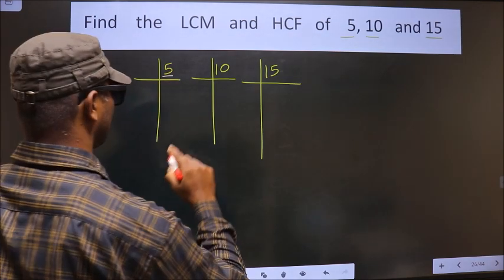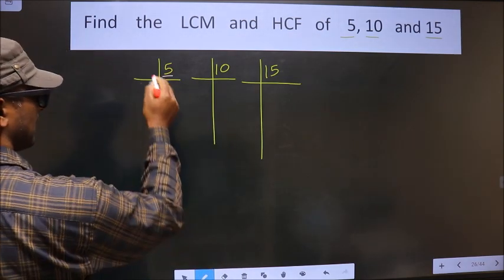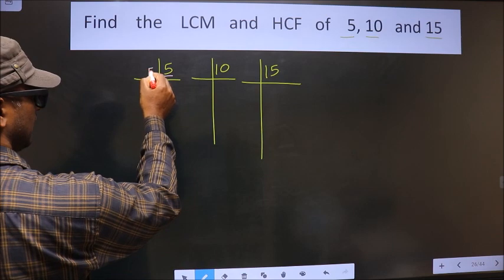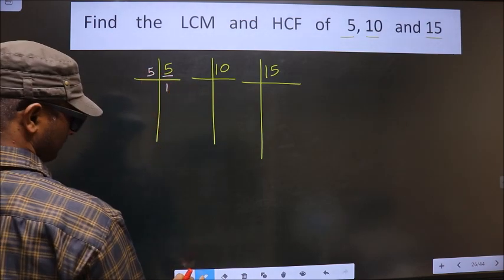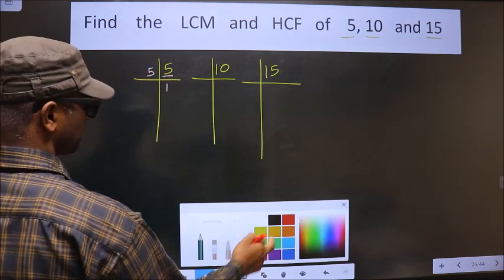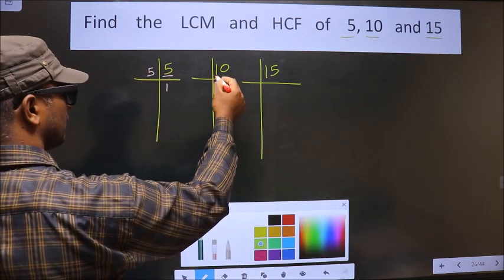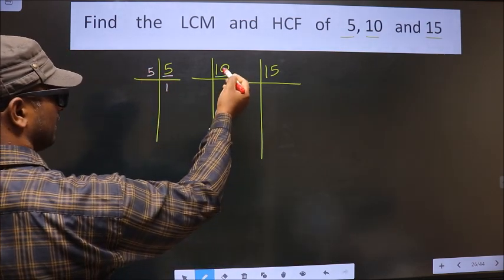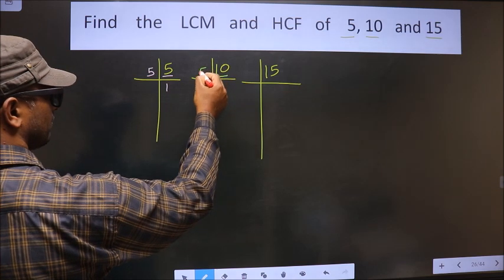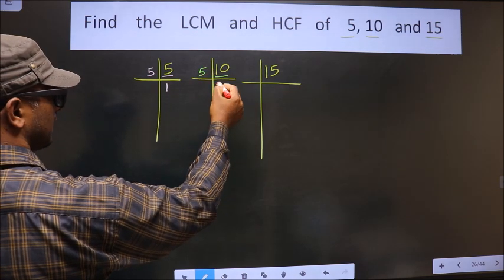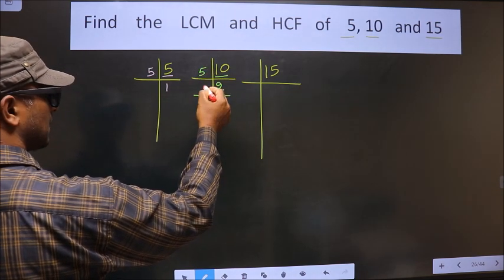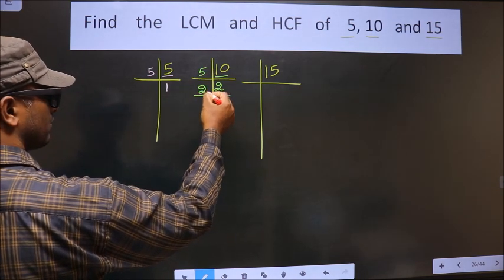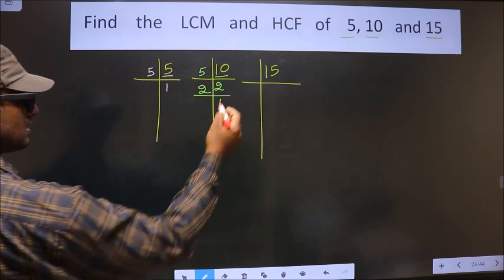Here we have 5. 5 is a prime number, so we take 5 once — just 5. Here we have 10. 10 is 5 times 2. Now, 2 is a prime number, so we take 2 once — just 2.